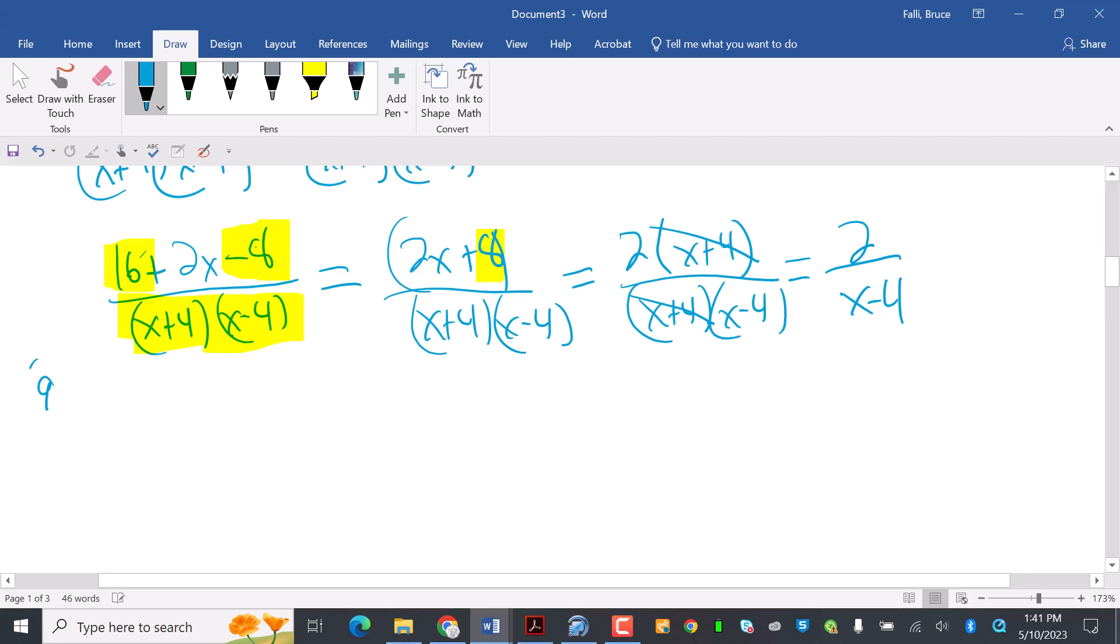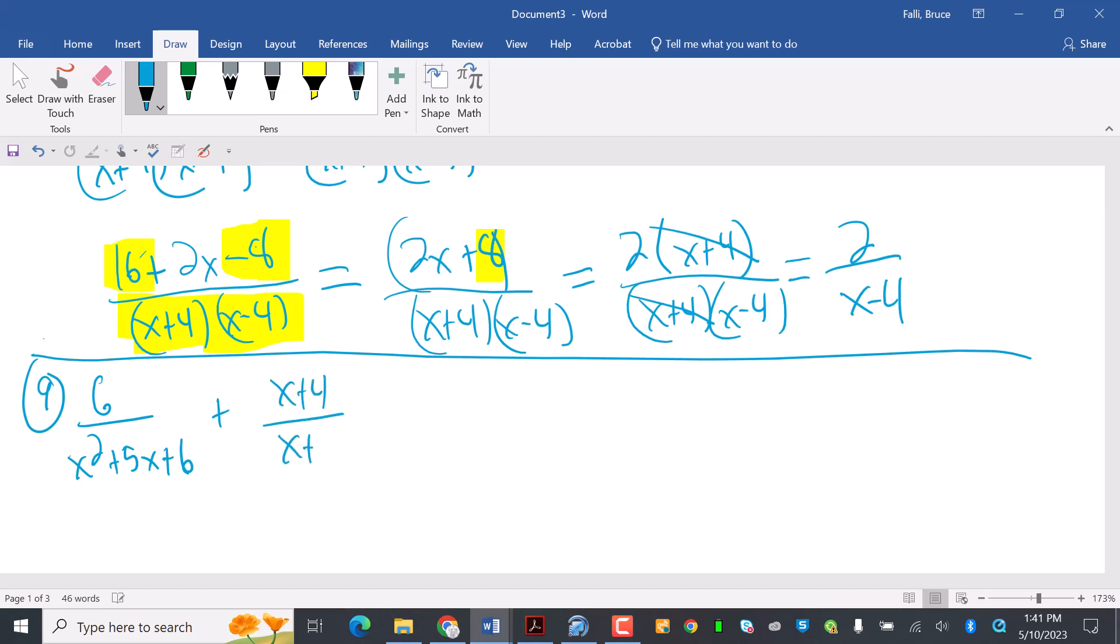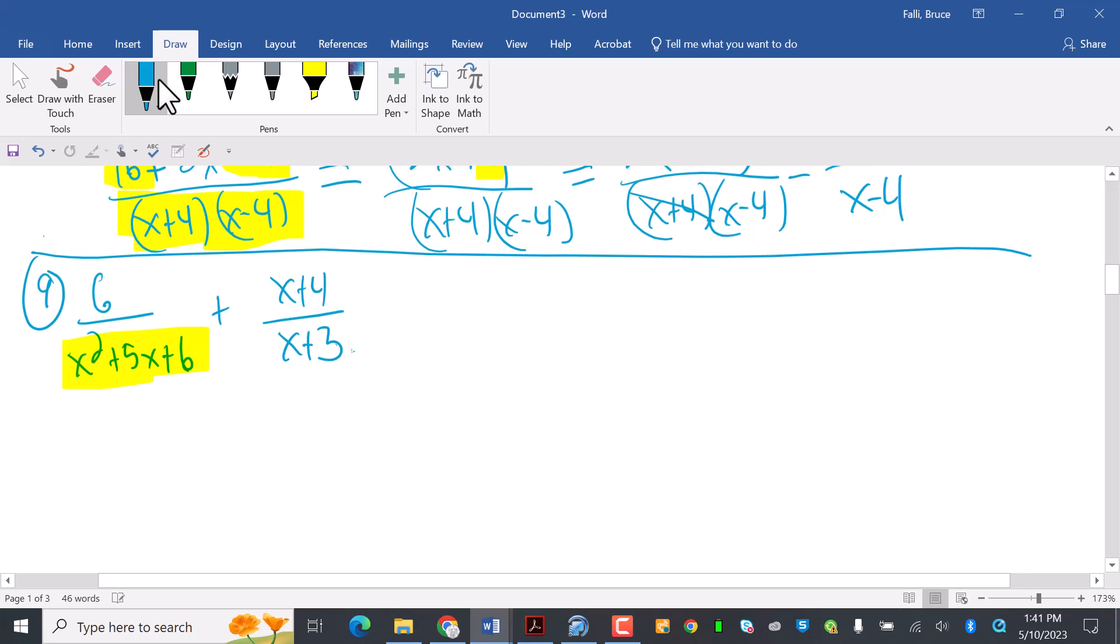Let's look at 9. 9 is the same type of deal. 9, I'm going to have 6 over x squared plus 5x plus 6 plus x plus 4 over x plus 3. Now whenever you see a trinomial like this right here, this trinomial is going to be factorable. And it's probably going to have an x plus 3 in it. Because they're going to make my common factors a little easier. So I'm going to do 6 over factoring this. x squared plus 5x plus 6 would be x plus 3.